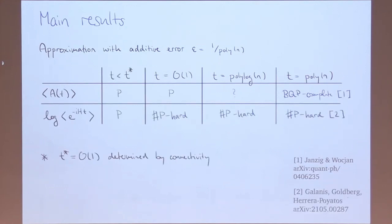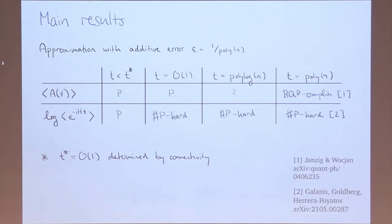For the Loschmidt echo the situation is a little different. We actually look at the logarithm of this quantity. We find again that at short times it's polynomial, but only up to some constant time t-star, which depends on how connected your Hamiltonian is. It's also known that for some longer constant times this problem becomes sharply hard even for a classical Hamiltonian. The intuitive reason is that these expectation values very quickly become exponentially small — you're trying to approximate the logarithm with additive error, meaning multiplicative error on something exponentially small, which is just difficult.